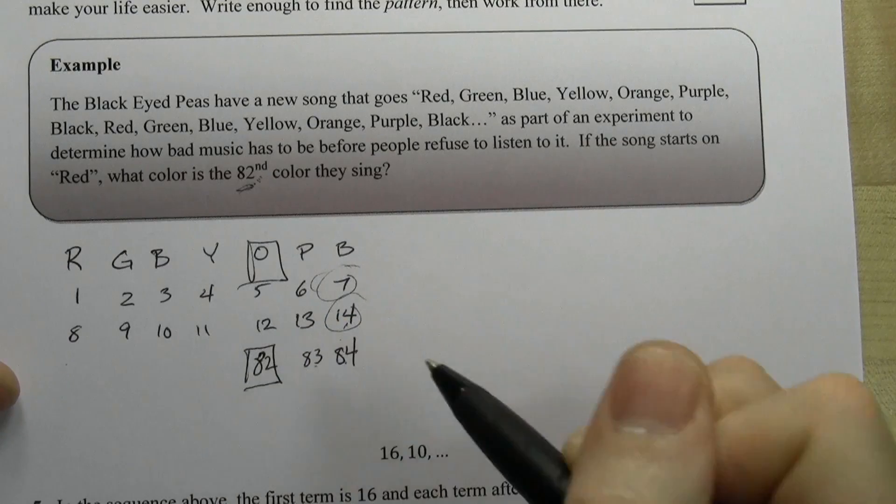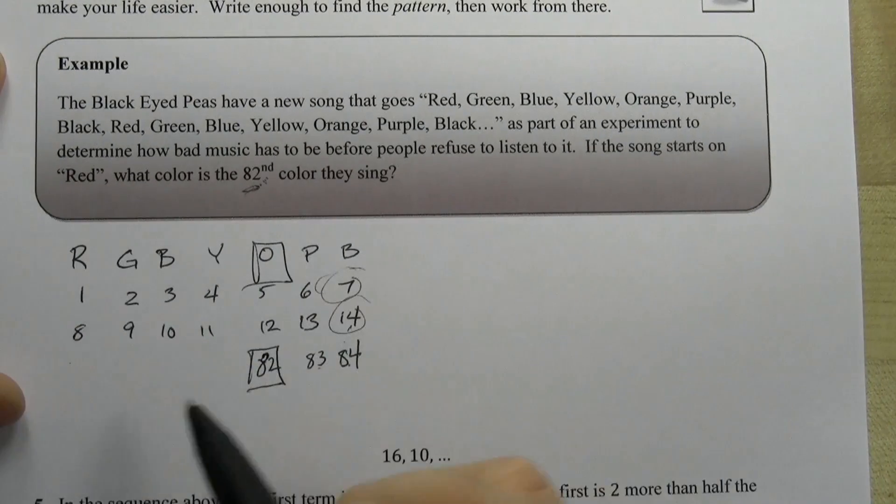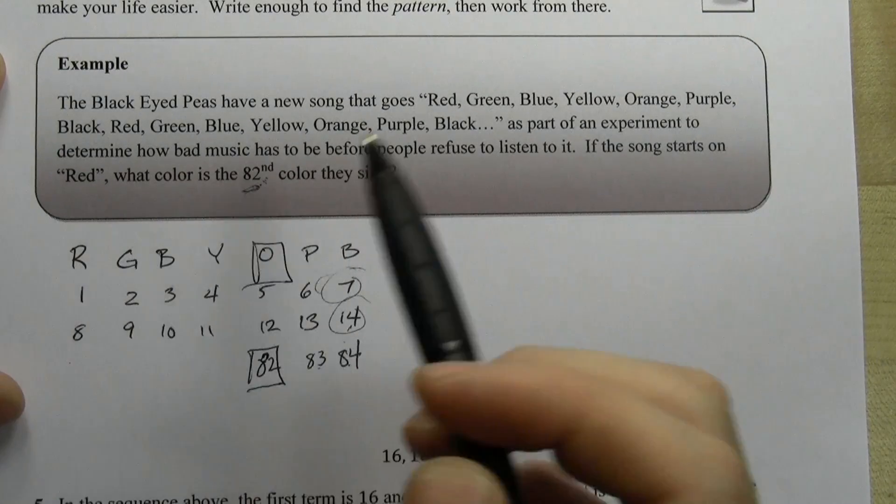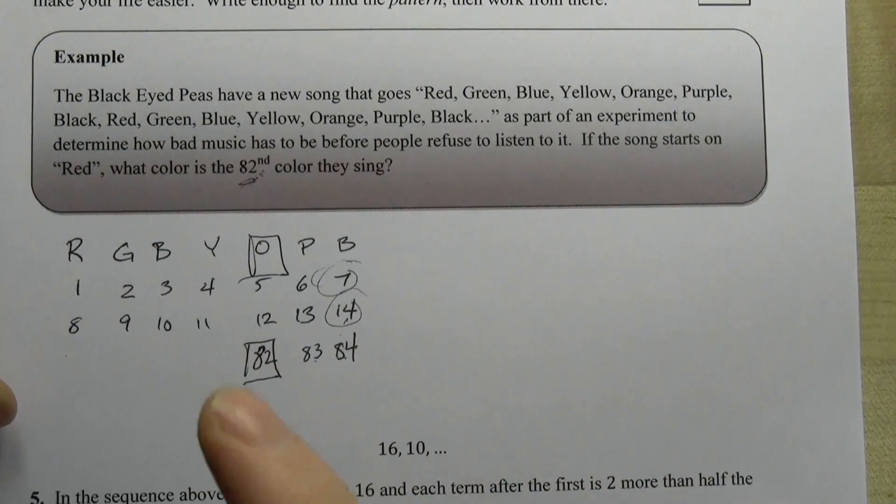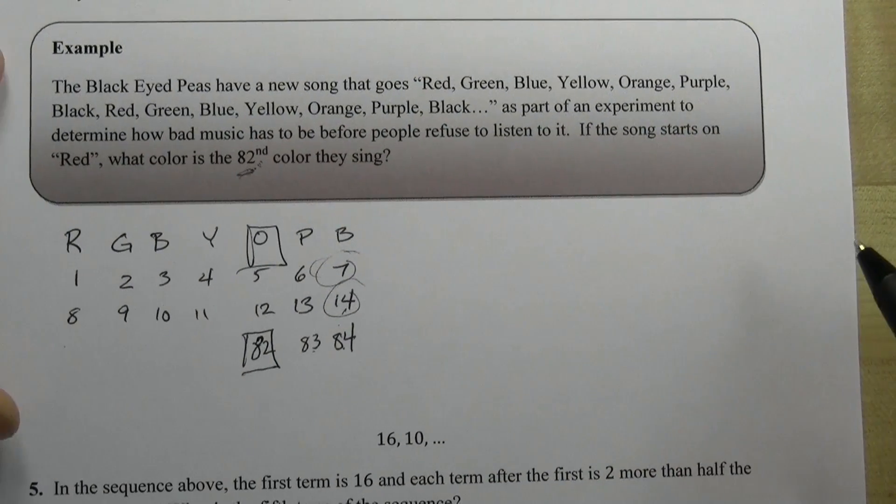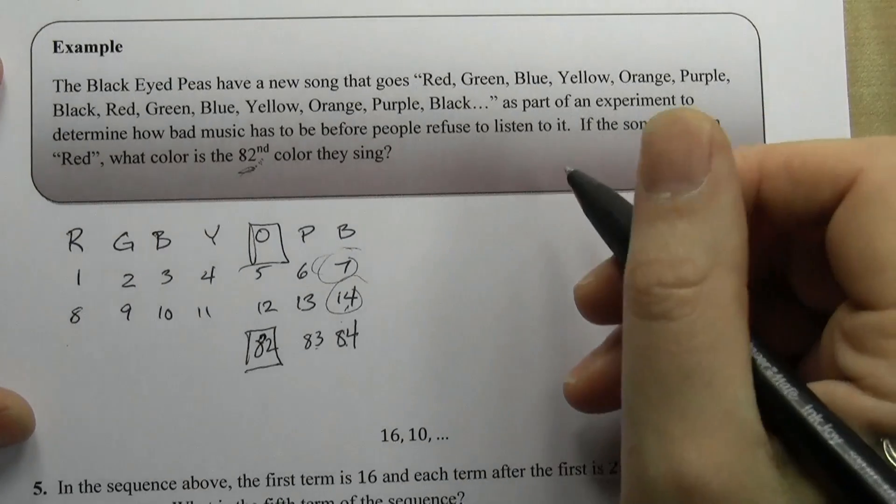All right, so that's one way of solving this question, the calendar method. This will work even if there aren't seven, it'll work if there are six or eight or whatever. The other method is a little less intuitive but it's a little faster as well. It's called the division method.